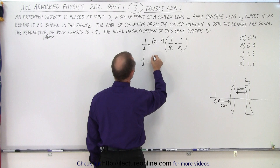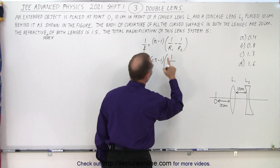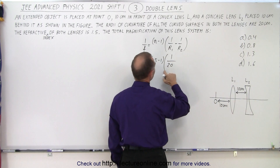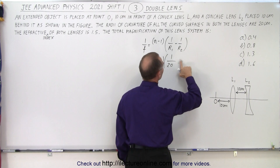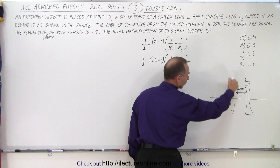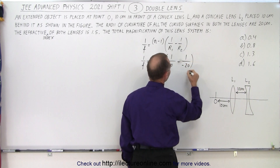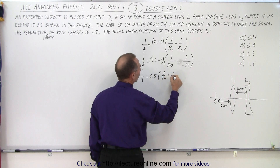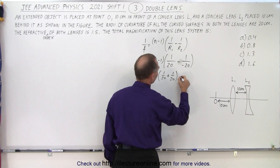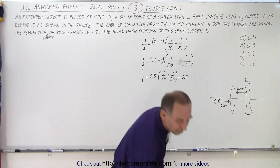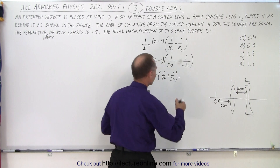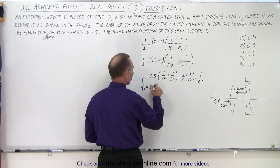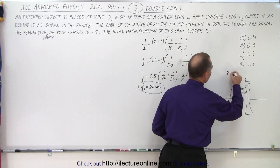So we have 1 over f equals 1.5 minus 1, times 1 over R1. The radii are 20 centimeters. When the surface bulges to the left it's a positive value, so it would be 1 over 20 minus 1 over negative 20, since the back surface bulges to the right. Cleaning this up: 1 over f equals 0.5 times 1 over 20 plus 1 over 20, which is 1/2 times 1/10, giving 1/20. So the focal length of the first lens is 20 centimeters.